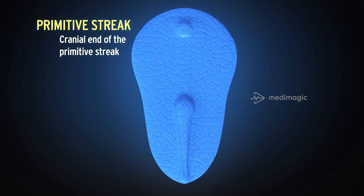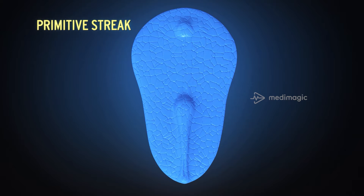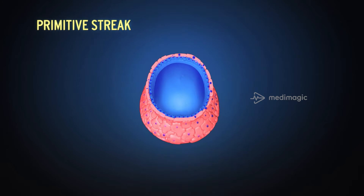The cells form an elevation known as the primitive node, also known as Hensen's node, which bulges into the amniotic cavity. Soon, a depression appears in the primitive node known as the primitive pit.